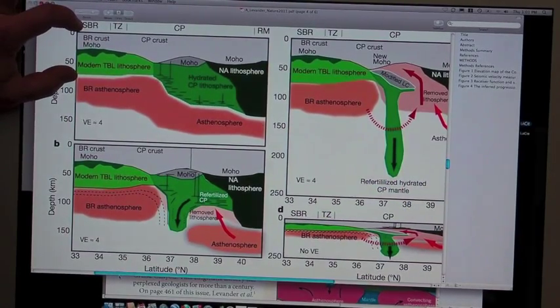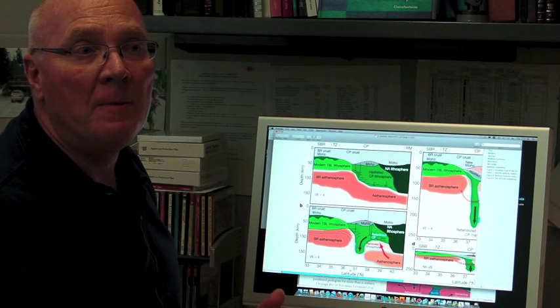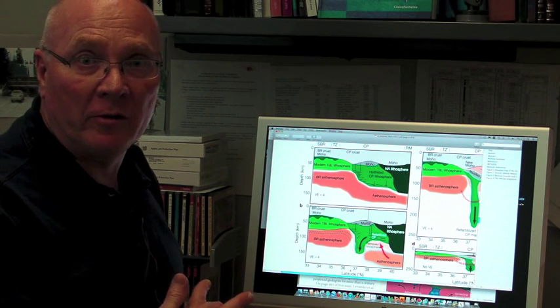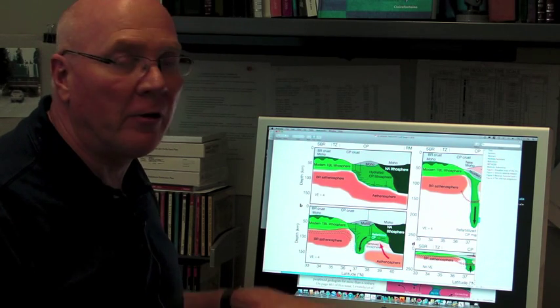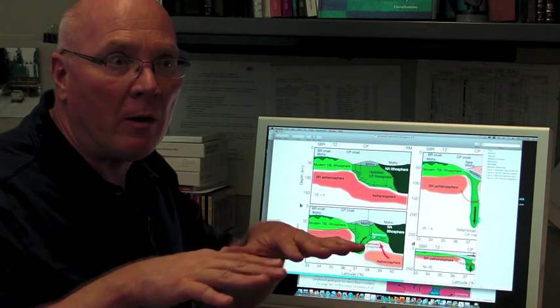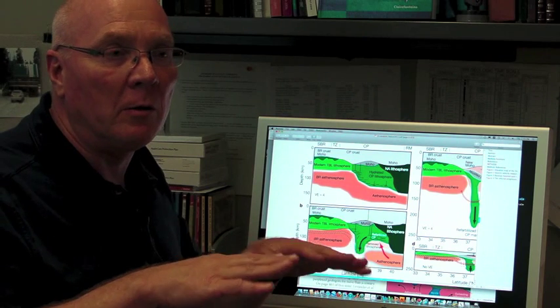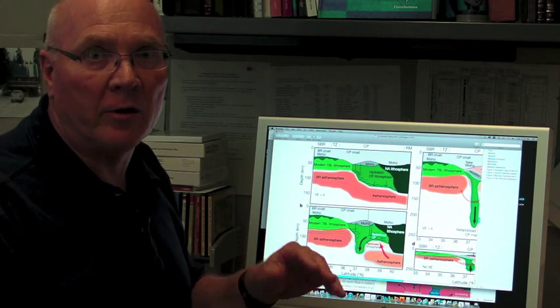And what's below it is the asthenosphere. And the asthenosphere is a much less viscous, meaning stiff or strong layer than the lithosphere. So the lithosphere moves around rigidly or nearly rigidly, and the asthenosphere flows underneath it.